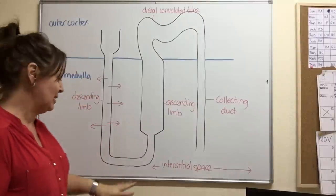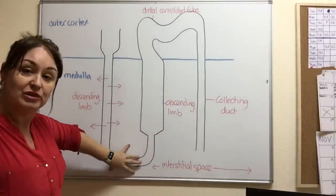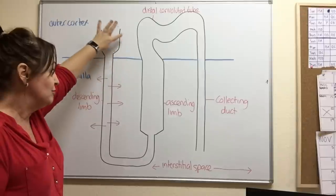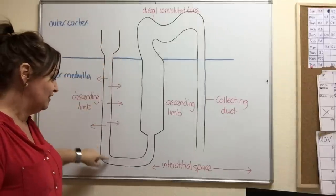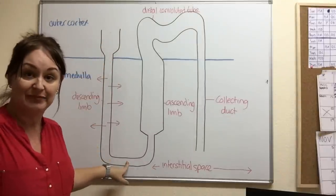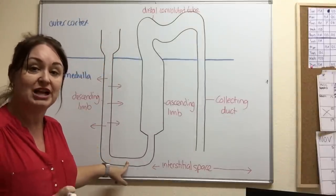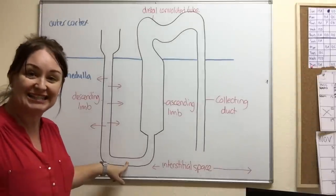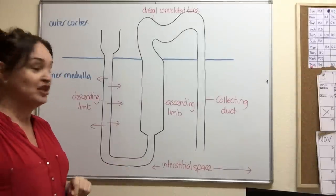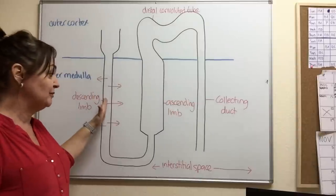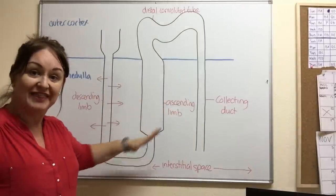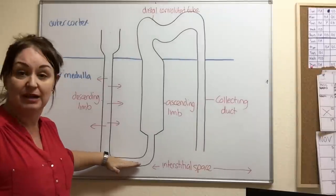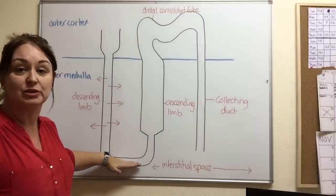And then the third point I'd like to make is about the base. What we want to remember is that the most concentrated filtrate occurs here. In other words, the water potential is the most lowest, is the most negative at the base. So we're just going to remember those three facts: permeable, impermeable, and this is where we find the water potential at its absolute lowest.